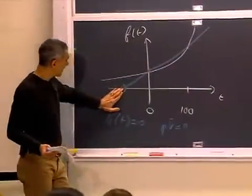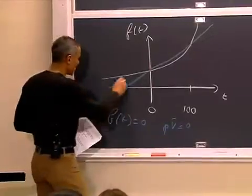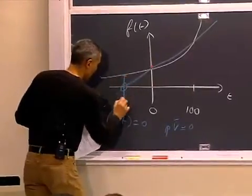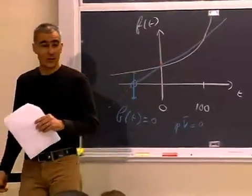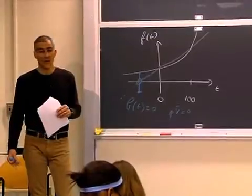That means that this part here can't happen. That means that this temperature right here is the absolute lowest temperature you can go to that physically makes any sense. That's the absolute zero.